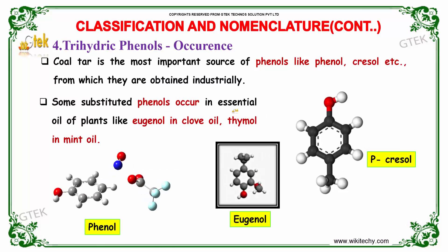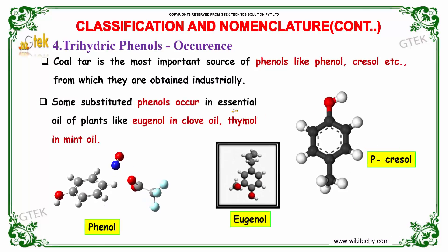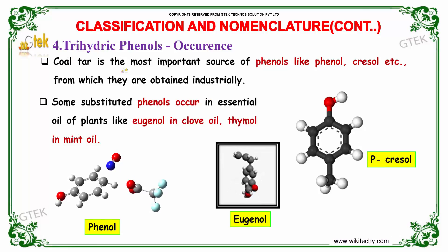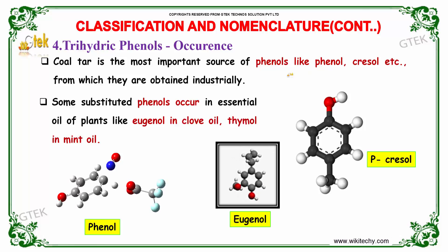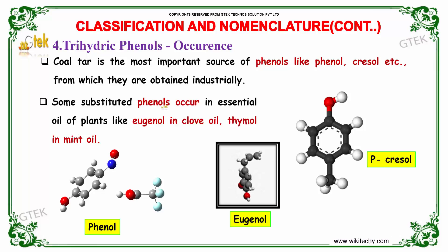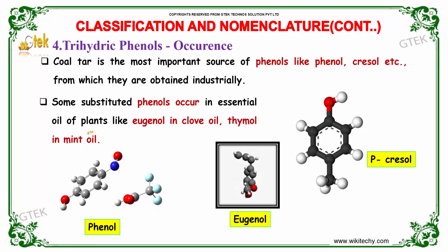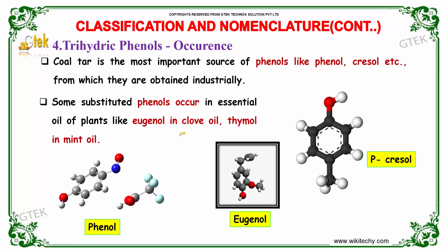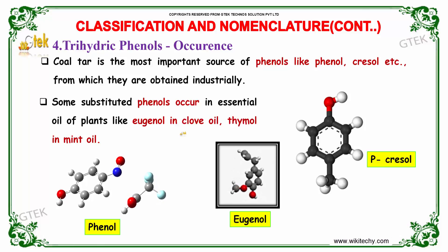Let us discuss about the occurrence of Phenols. Coal tar is the most important source of Phenols like Phenol, Cresol, etc., from which they are obtained industrially. Some substituted Phenols occur in essential oils of plants, like Eugenol in clove oil and Thymol in mint oil.